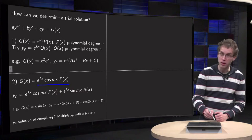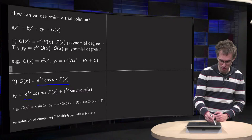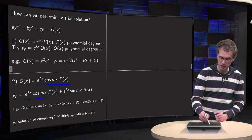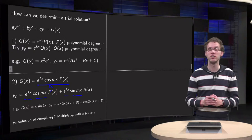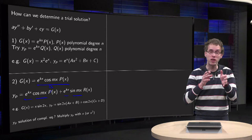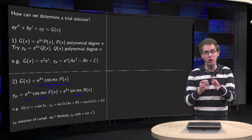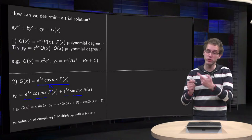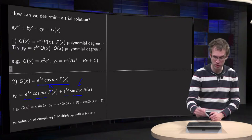You try as your trial solution e to the power kx times cosine mx times q of x, plus e to the power kx sine mx times r of x. So you do not just take only e to the power kx times cosine mx with an arbitrary polynomial, but you also include the sine terms.